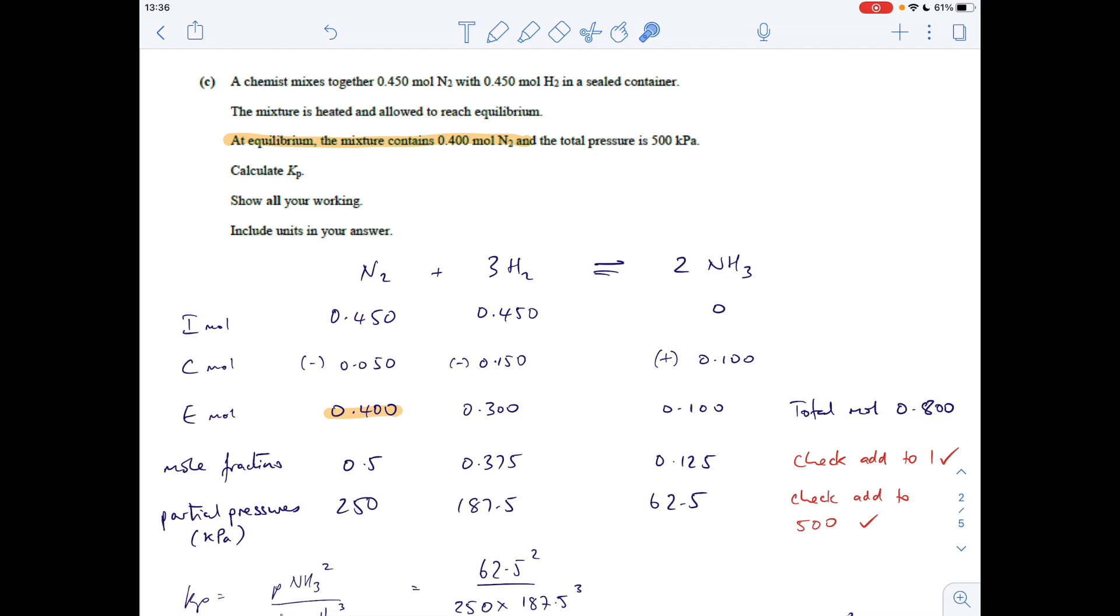Mole fractions now: it's the moles at equilibrium divided by total moles, giving you those numbers. I always tell my students to check they add up to 1 - it's a little check you can do in the middle of your calculation to verify you're on the right track. They should add up to 1, which they do.